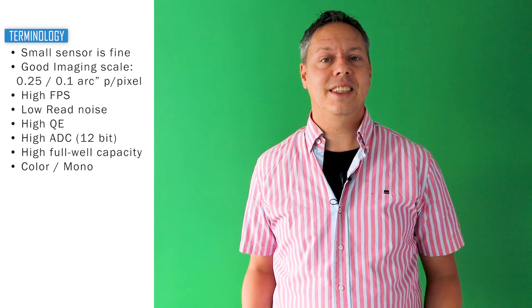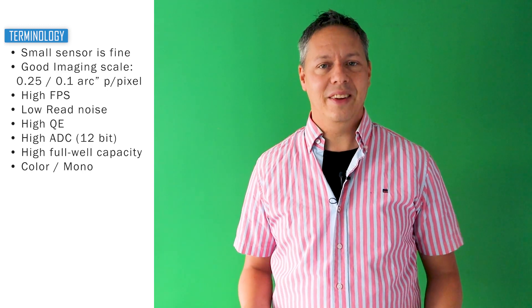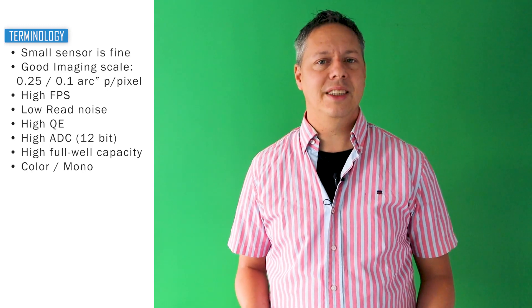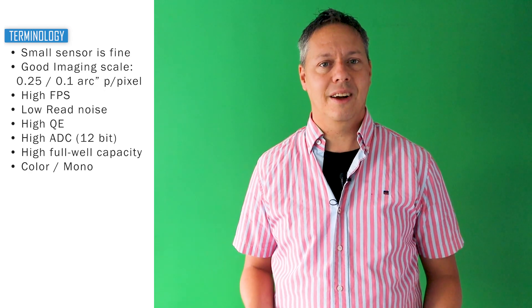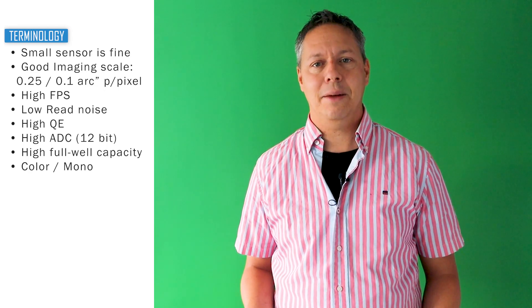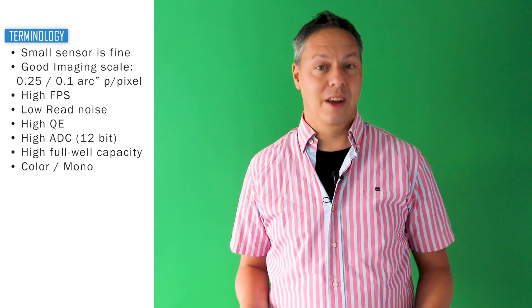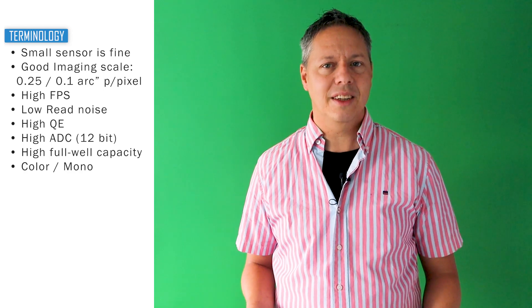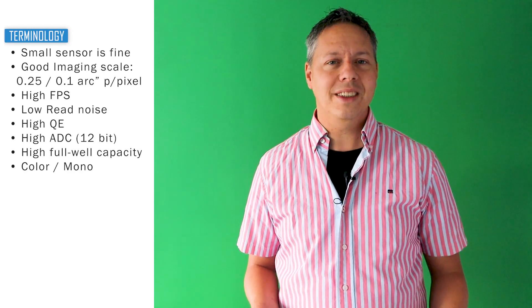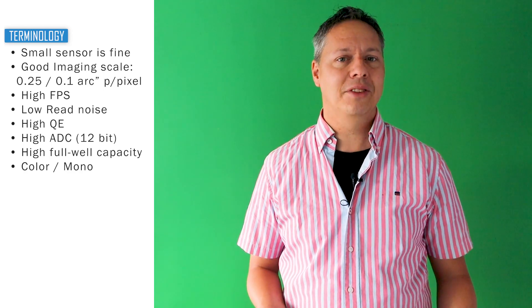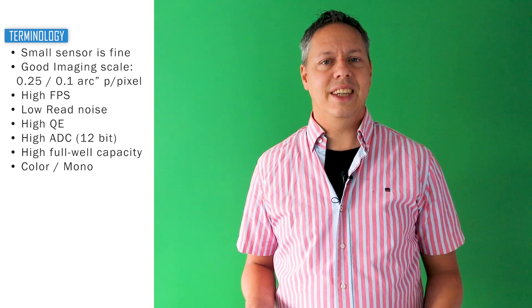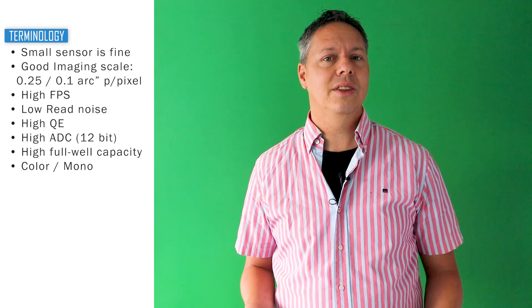Finally, a high bit ADC and a high full well capacity will give us a better dynamic range, meaning you'll get more variations between the darkest and brightest color tones that a camera can capture. I will discuss both color and mono cameras. Color cameras are easier to use, whereas you can get better results with mono cameras, but it will take you more effort and you will have to buy additional filters. If you are going to use a color camera, the general recommendation is to also use an infrared cut filter to get a good color balance.